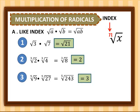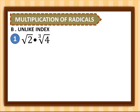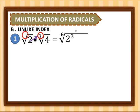Now let's proceed to unlike index. First example: square root of 2 times cube root of 4. The indices here are 2 and 3, so we multiply them: 2 times 3 gives us 6. Inside, we are going to write 2 cubed times 4 squared.